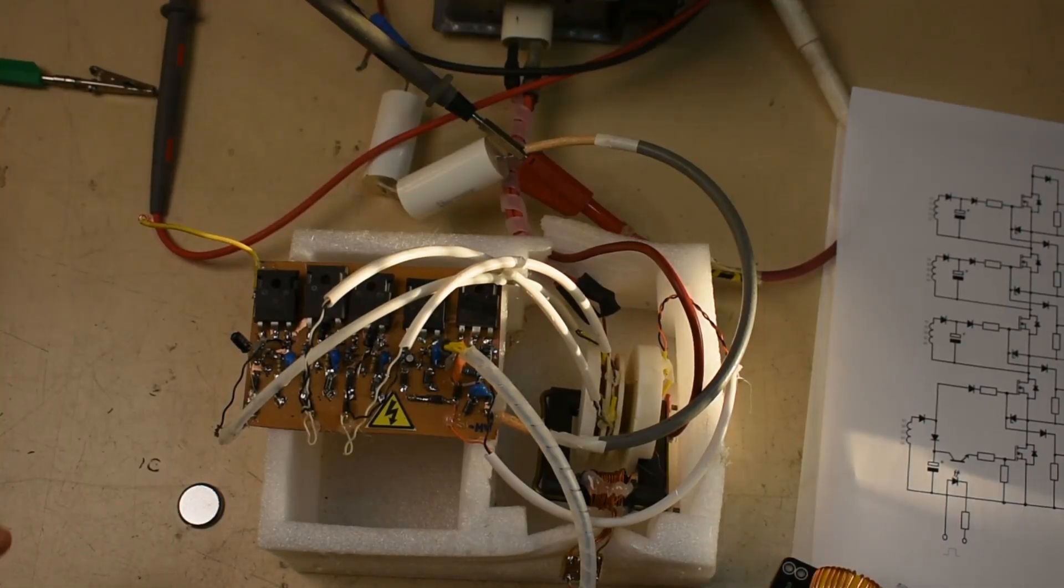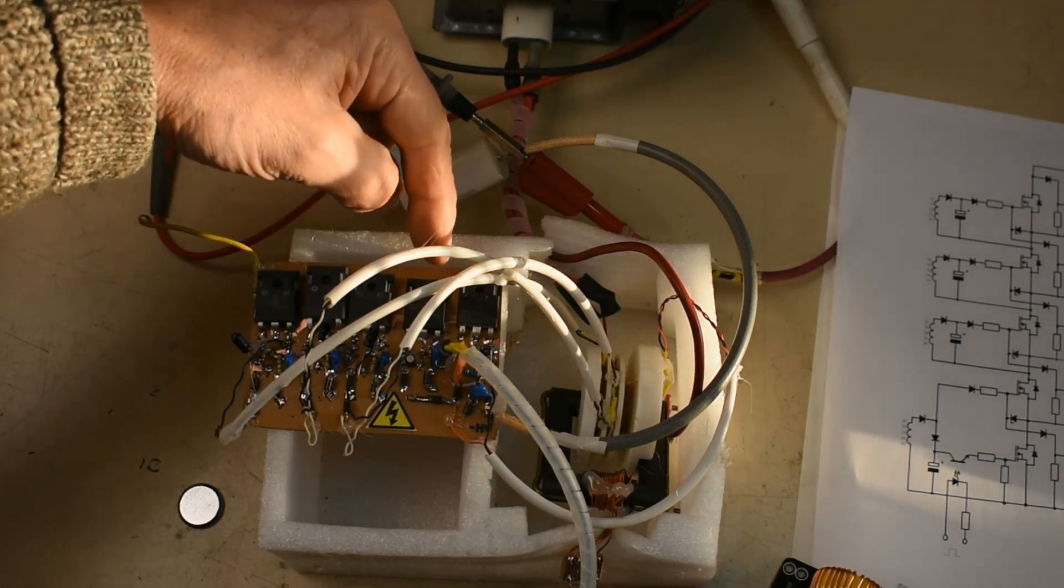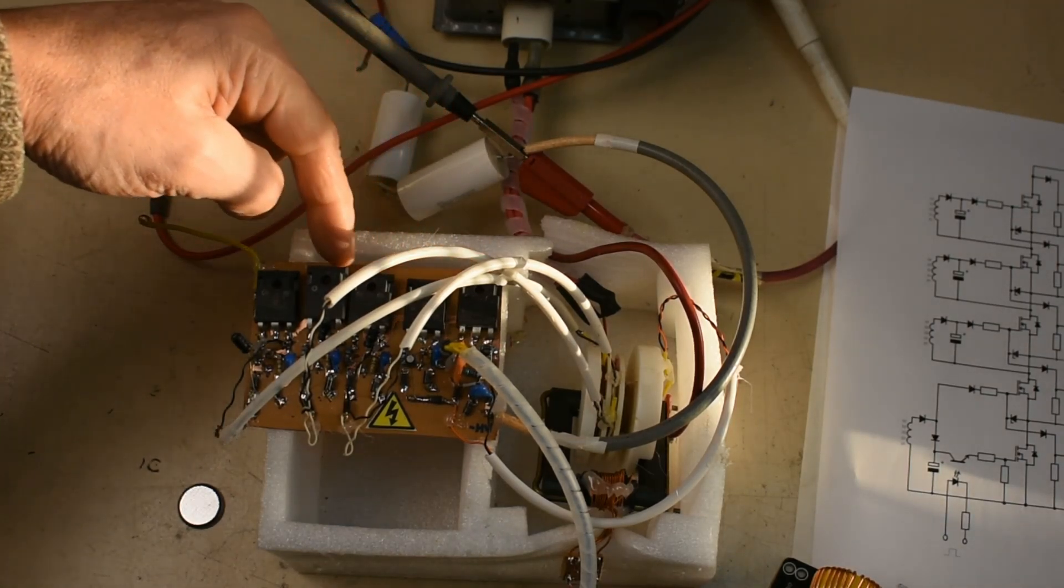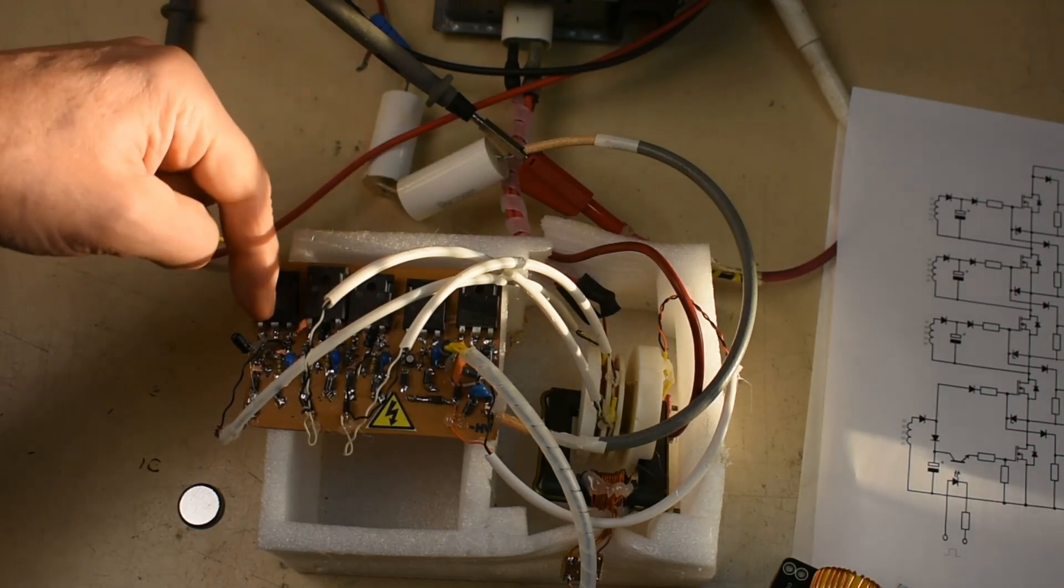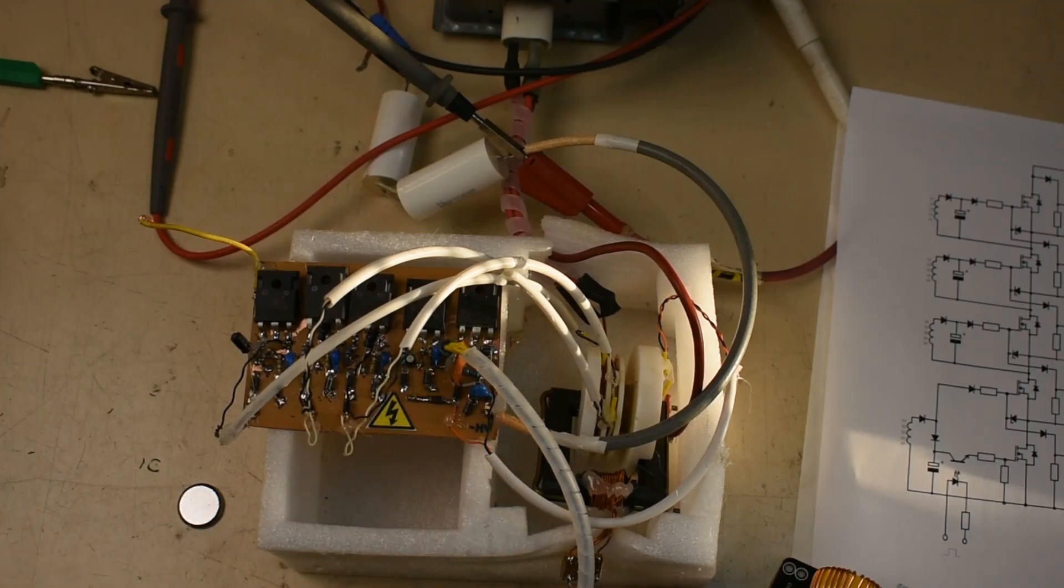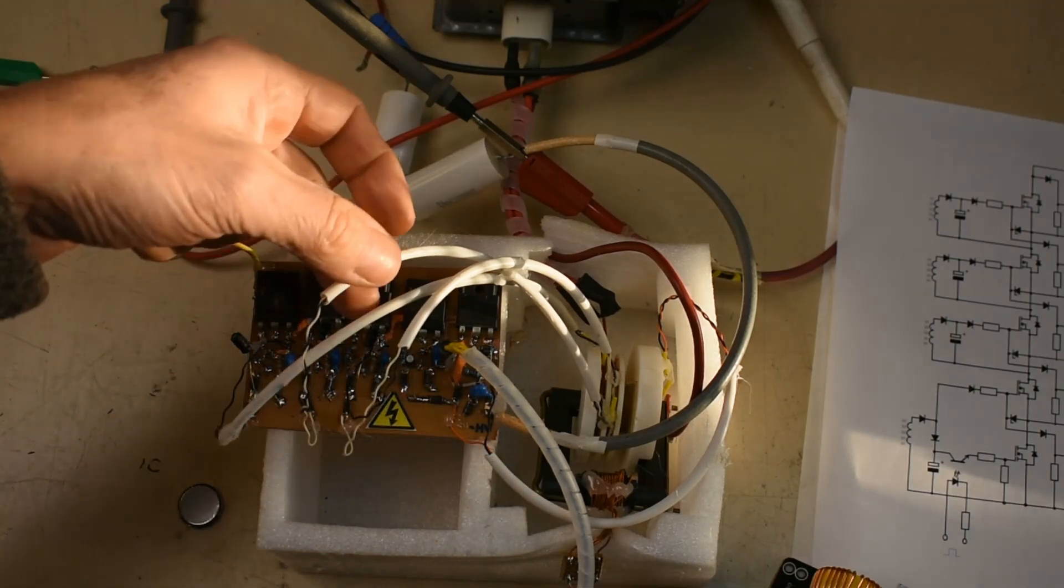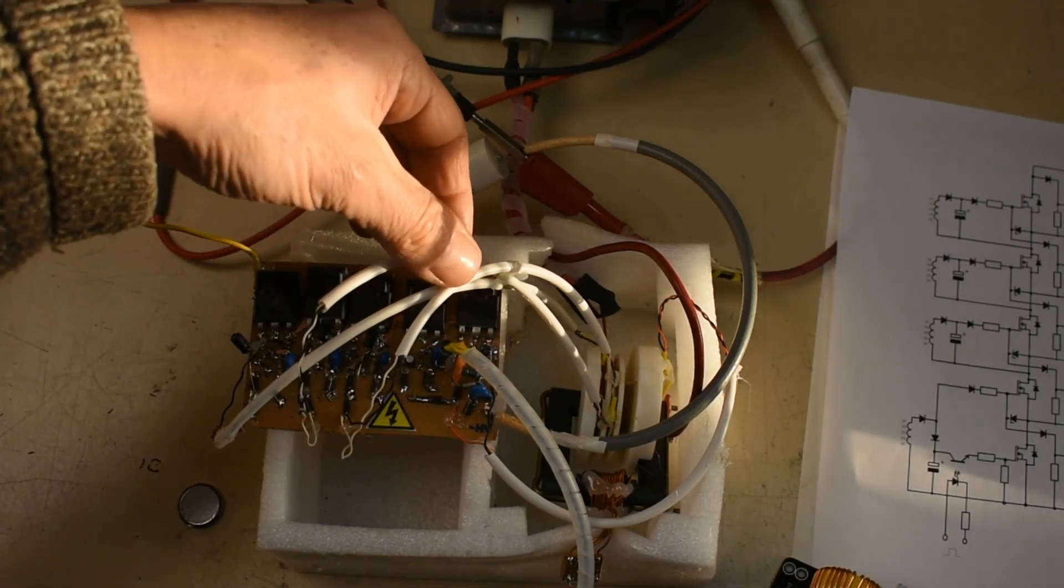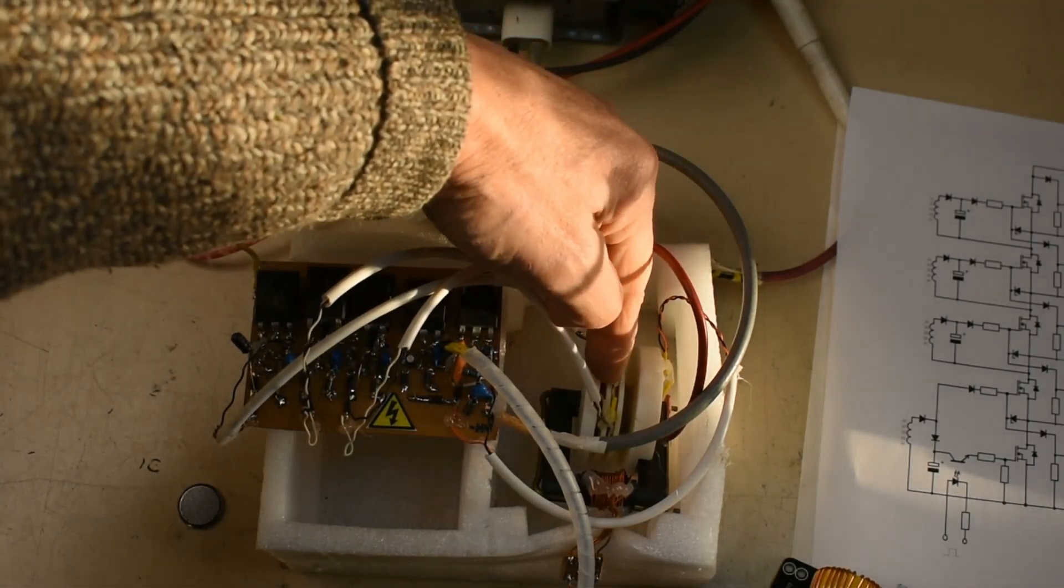And this is the result. So we have again five stages here with the silicon carbide MOSFETs and the driver circuits for them. Still using the same optocoupler as before, but this time we have each of these wires that are bringing in a separate low voltage supply from this transformer.